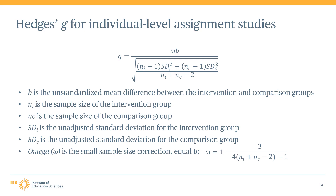The denominator of the effect size calculation represents the pooled standard deviation, and this is what standardizes the effect size to ensure that it is in standard deviation units. In the denominator, NI and NC are the sample sizes for the intervention and comparison groups respectively. SDI and SDC are the unadjusted standard deviations for the intervention and comparison groups respectively. So the denominator, or pooled standard deviation, represents the weighted average of both groups' standard deviations. This equation, along with all important equations used by the WWC, is discussed in greater detail in Appendix E of the handbook.